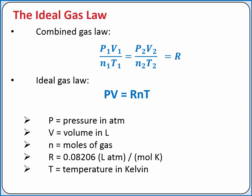The units of the ideal gas law constant dictate the units we need in the equation. We need to use liters for volume, atmosphere for pressure, moles for moles of gas, and Kelvin for temperature. When we do, the ideal gas law constant is 0.08206 liter atm per mole Kelvin.